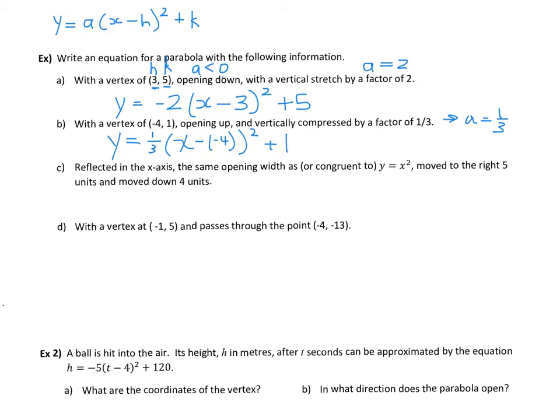So our final answer for this, I'm just going to use a different color, our final answer to tidy this part up in here, we're going to have y equals one-third, bracket, x, plus 4, all squared, and then plus 1. So there we go, that's our equation for that one.